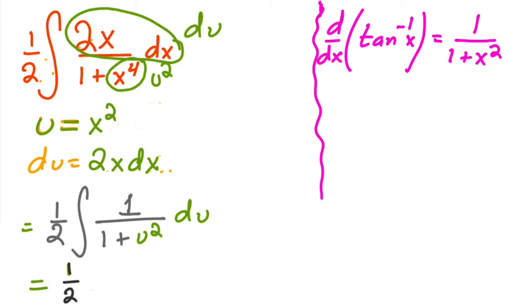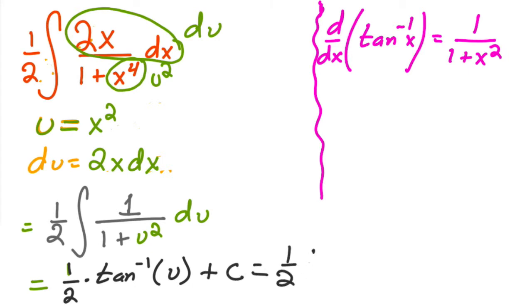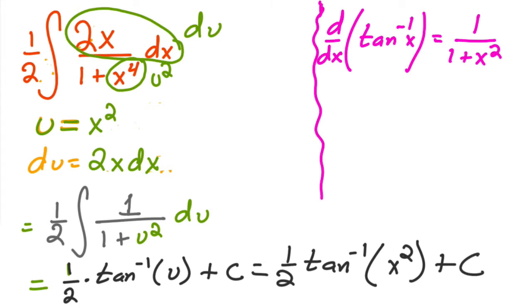The anti-derivative of 1/(1 + u²) is arctan(u), so the answer is (1/2)·arctan(x²) + C.